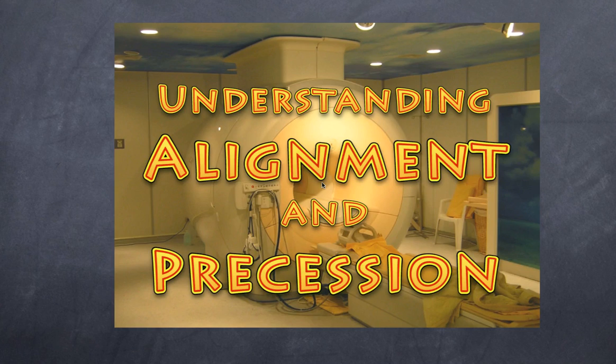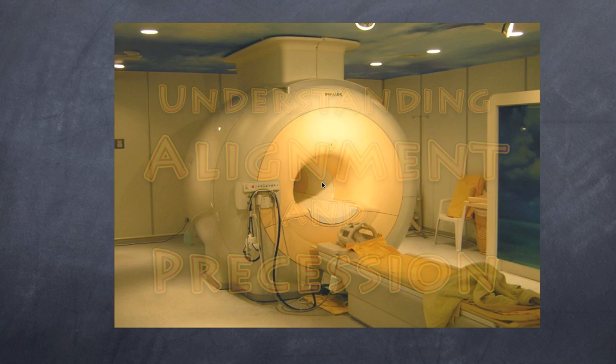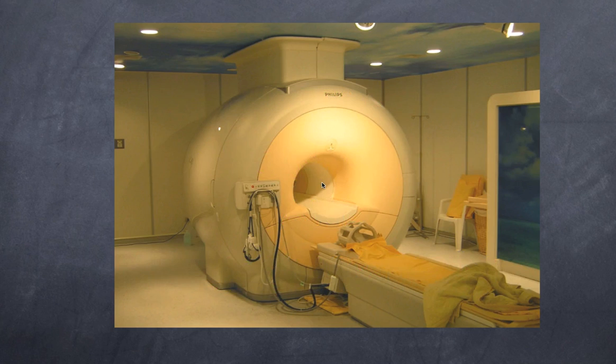In particular, we're going to look at alignment and precession. Here we have a picture of an MRI machine. An MRI machine basically is one very large electromagnet, and these things are usually on full time. This is a gantry.